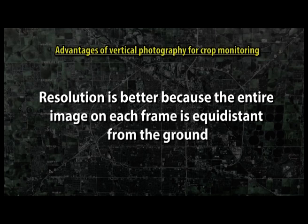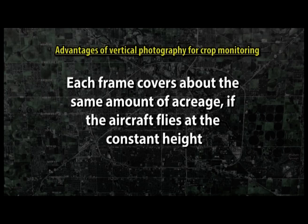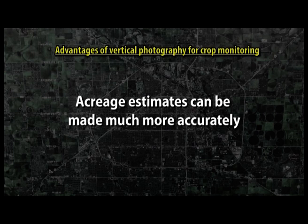For crop monitoring, vertical photography has some important advantages over oblique. Resolution is better because the entire image on each frame is equidistant from the ground, compared to oblique where the upper portion of the frame, being further away, becomes less distinct. Patterns, particularly subtle ones, can be seen much more easily. Each frame covers about the same amount of acreage if the aircraft flies at constant height, and acreage estimates can be made much more accurately. The disadvantage of vertical photography is that it requires a higher degree of planning and preparation than oblique.